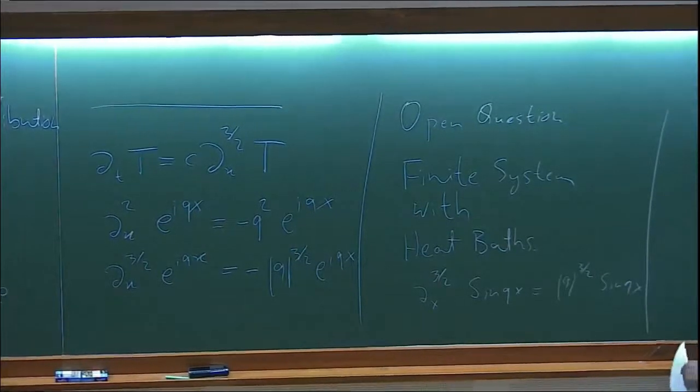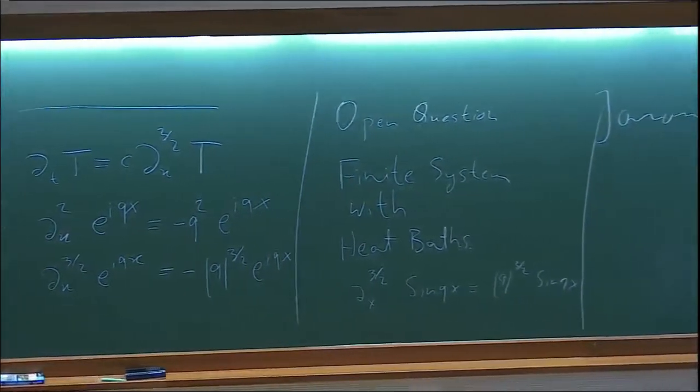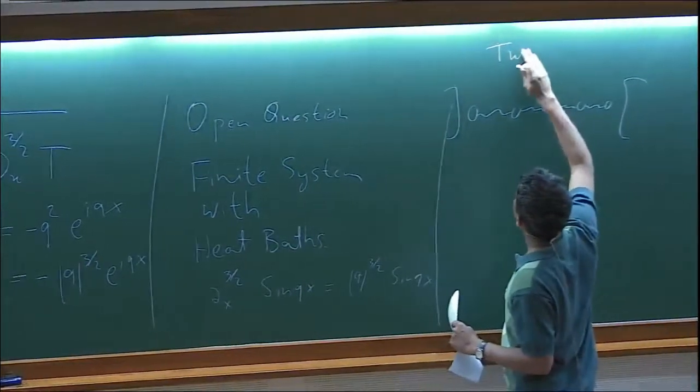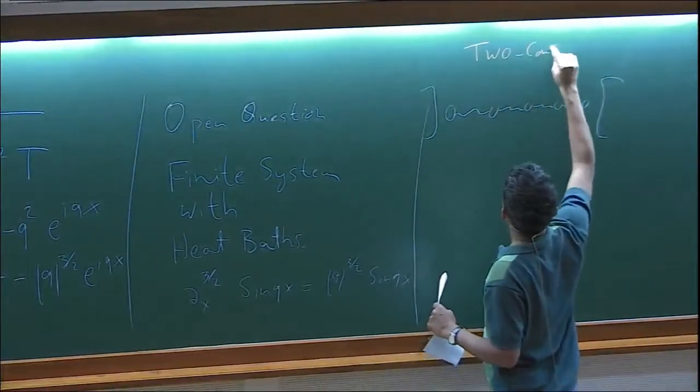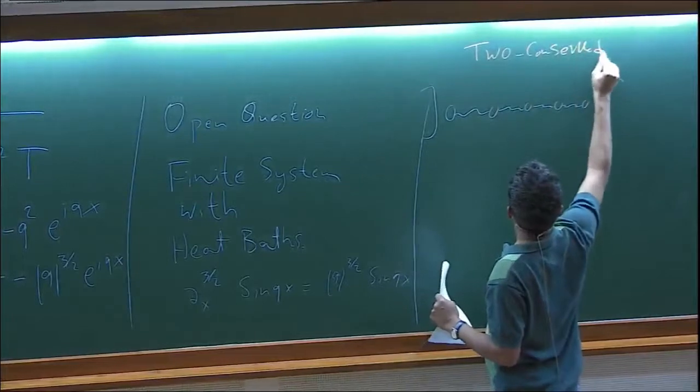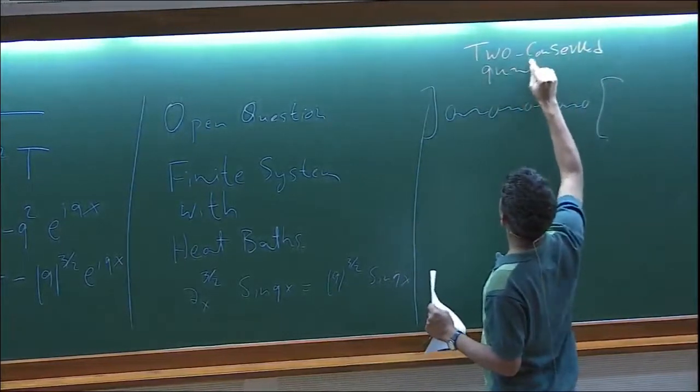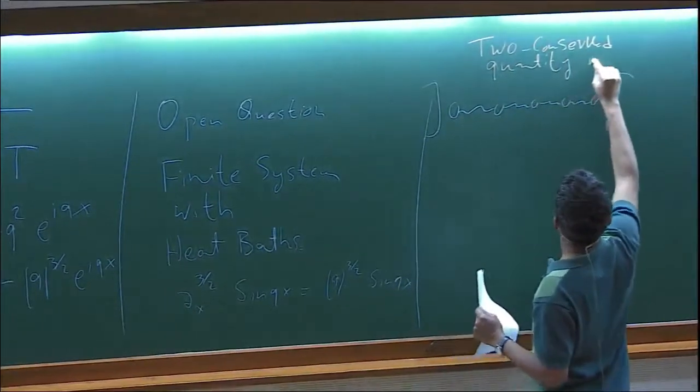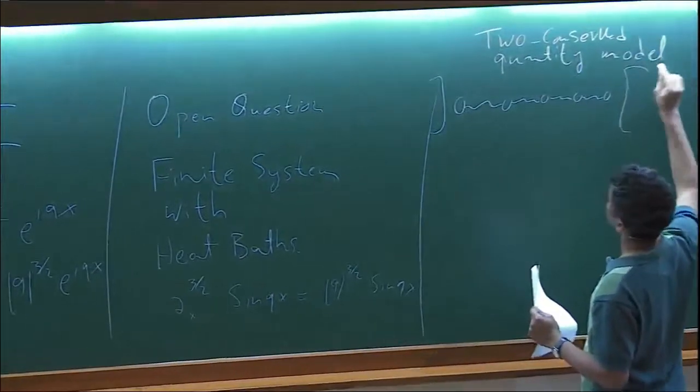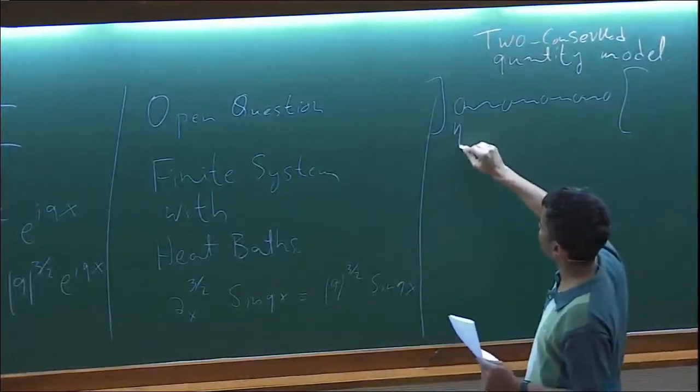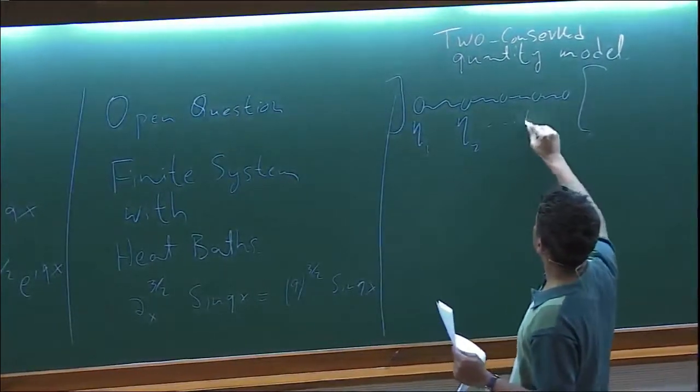So what is the model? The model basically is again a chain of particles connected by springs and then you have reservoirs. This is the two component or two conserved. At each site, you have a variable eta 1, eta 2, eta i.